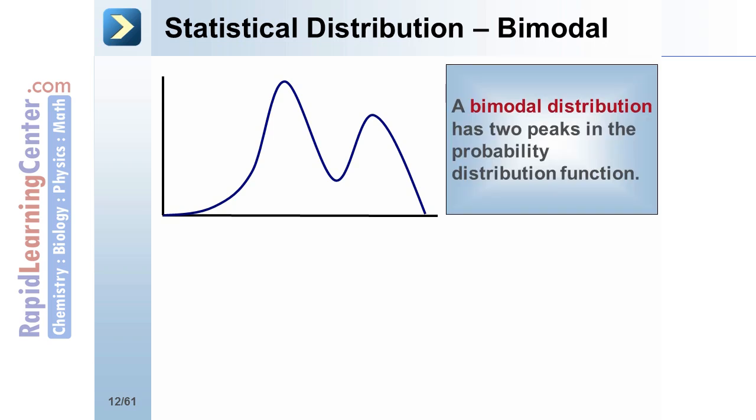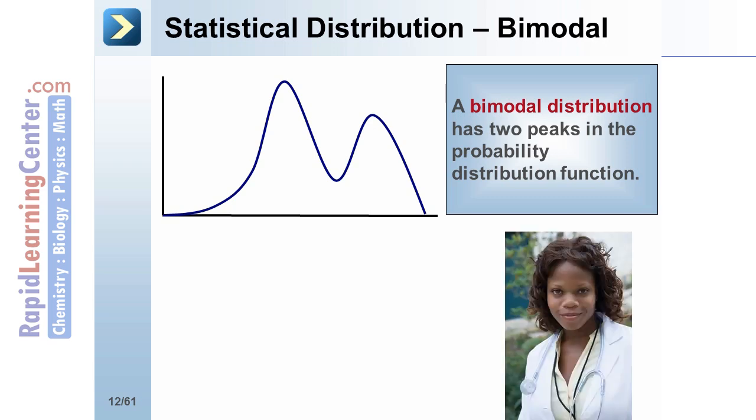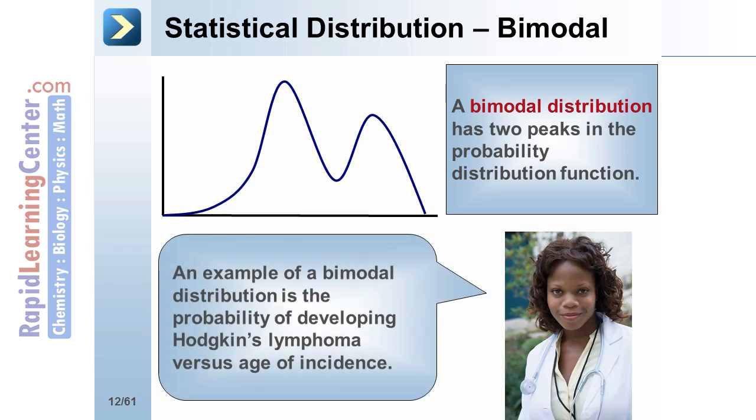A bimodal distribution has two peaks in the probability distribution function. An example of a bimodal distribution is the probability of developing Hodgkin's lymphoma versus the age of incidence.